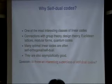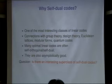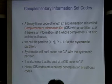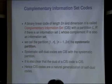Self-dual codes are a very popular class of linear codes in coding theory because of their wide connections with many areas in mathematics. It's natural to ask whether you can find another class of codes containing self-dual codes as a subclass. That's one motivation to study this linear code which I'm going to introduce — it's called Complementary Information Set codes.